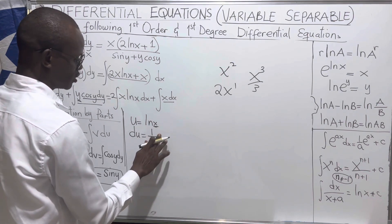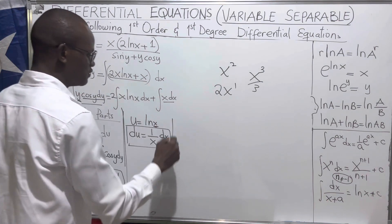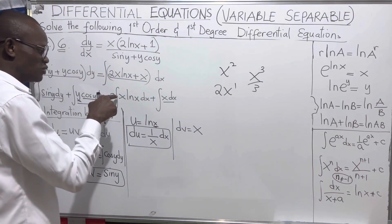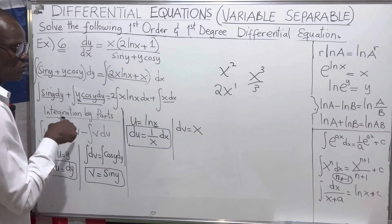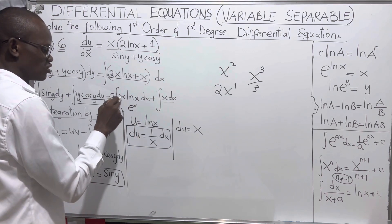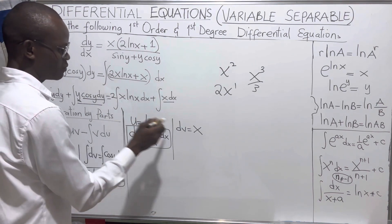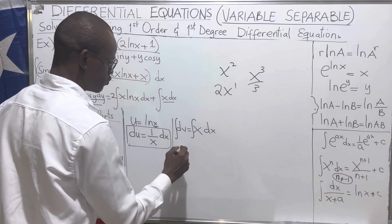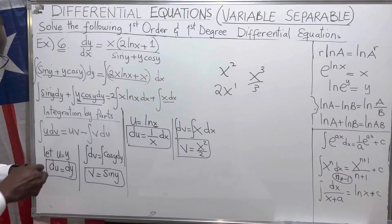The derivative of x is just one, so du is simply dx/x. Then dv equals x dx, because x is paired with ln(x). Had x been paired with a trigonometric or exponential function we would have used x as u, but since it is paired with a logarithmic function, x becomes our dv. Integrating gives v equals x²/2.